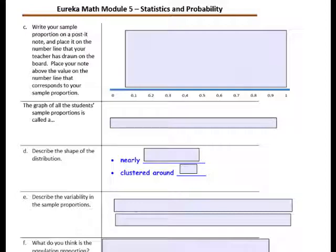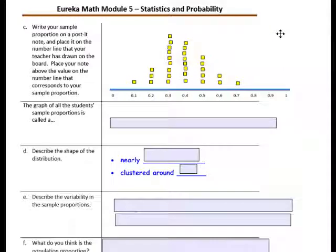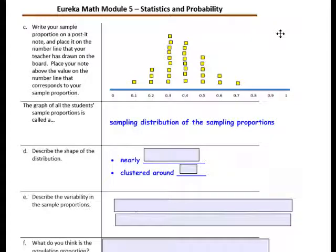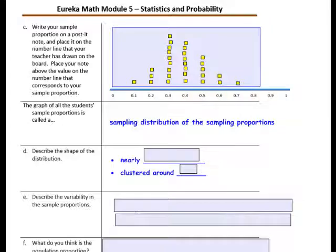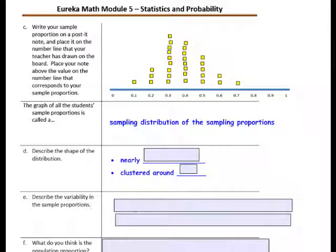Write your sample proportion on a post-it note and place it on your number line that your teacher has drawn on the board. Place your note above the value on the number line that corresponds to your sample proportion. The graph of all of the students' sample proportions is called a sampling distribution of the sample proportions. Describe the shape of the distribution — is it symmetrical, or skewed to the left or right? The shape of the distribution is nearly symmetrical, and it is clustered around 0.4.